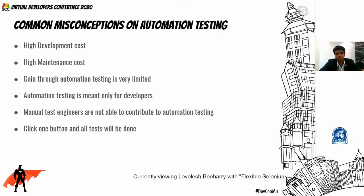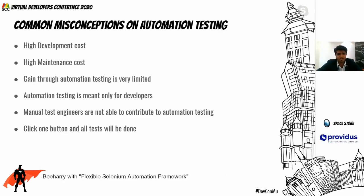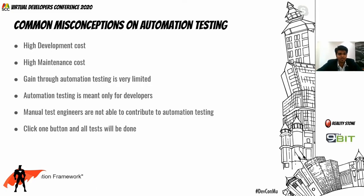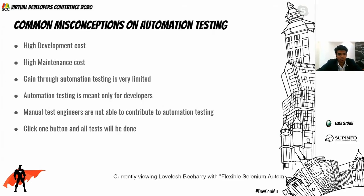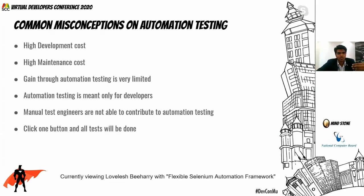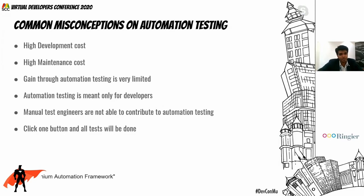Automation testing is also thought not to give the expected gain. This is dependent on the design. If an automation framework is designed following recommended guidelines, the gain is quite significant. At Ikea, we measured the gain through our automation framework and benchmarked it with manual testing — we came across a gain of 50% effort. A test team taking an hour to test a feature would do the same in 30 minutes through automation, and more checks are done as well.